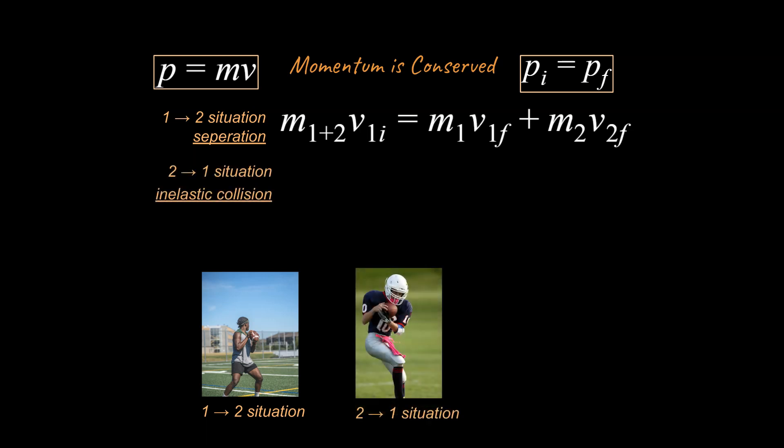Let's take a look at our second scenario, a two-to-one situation, also called an inelastic collision. Inelastic just means they don't bounce off each other; they stick together. We've got two terms on the left, one term on the right. Each term is an mv. Think about what this equation is going to look like for the two-to-one scenario.